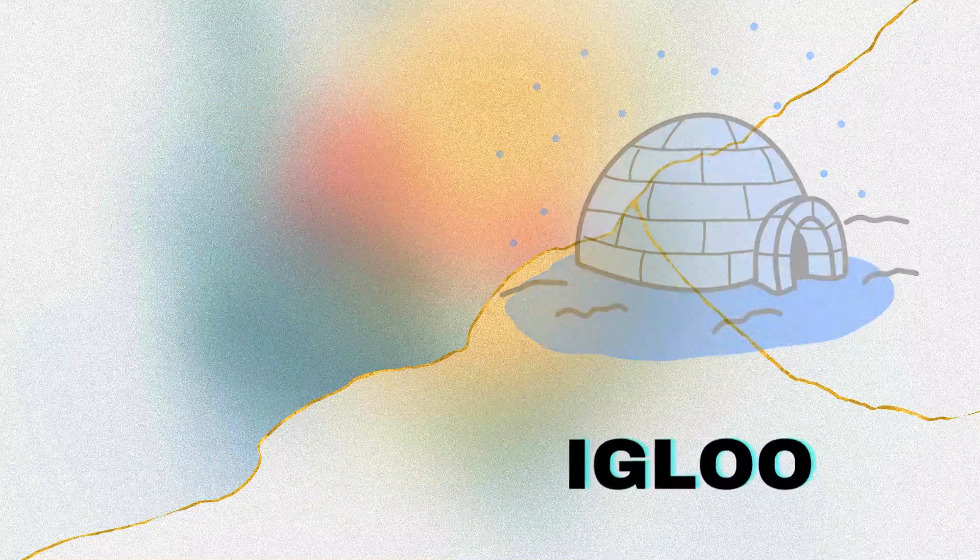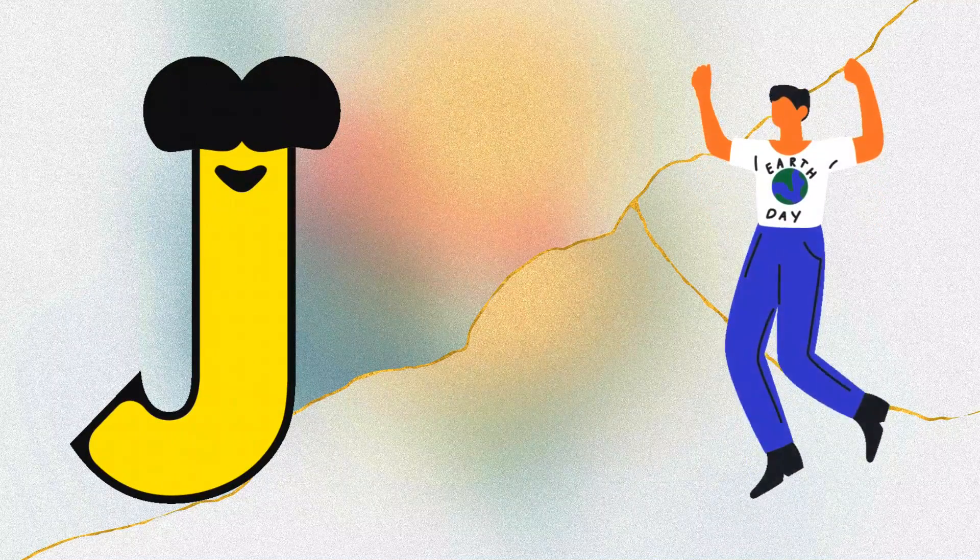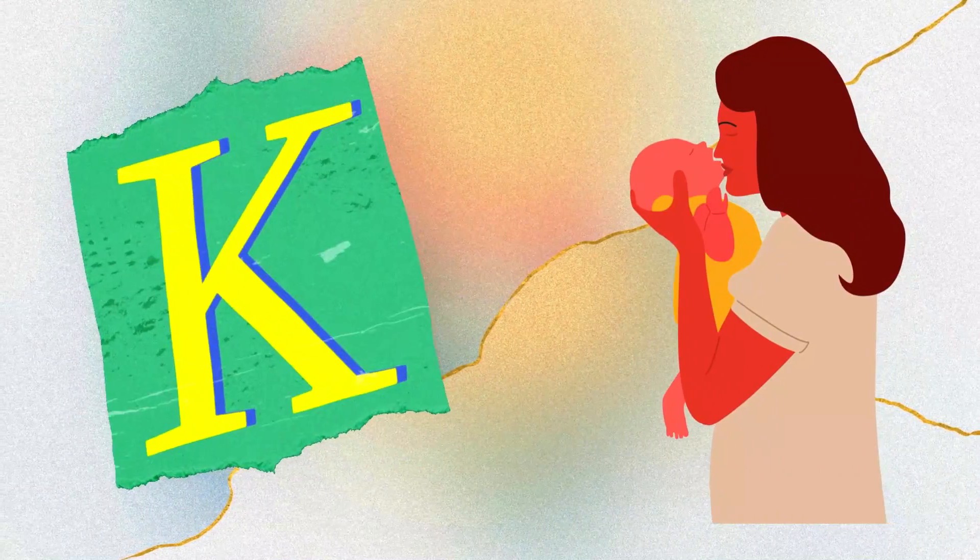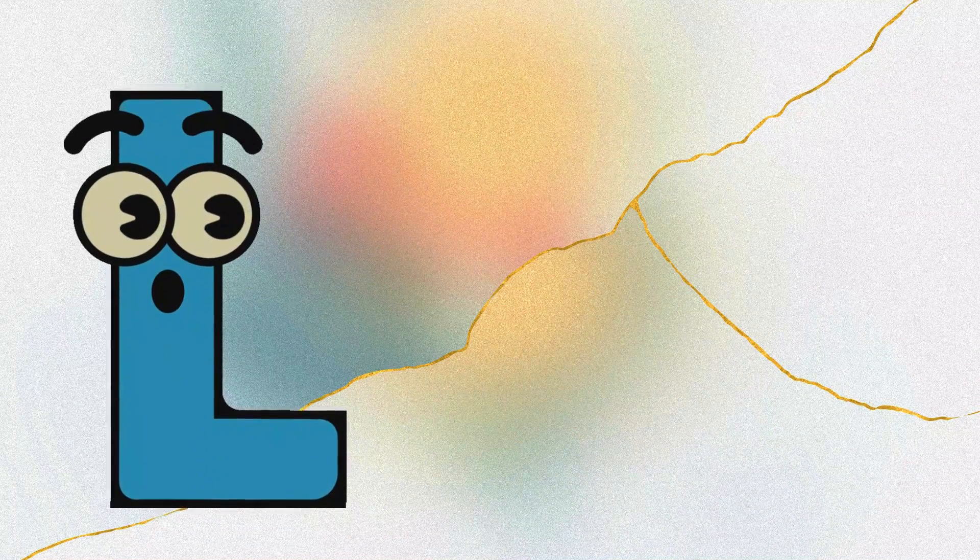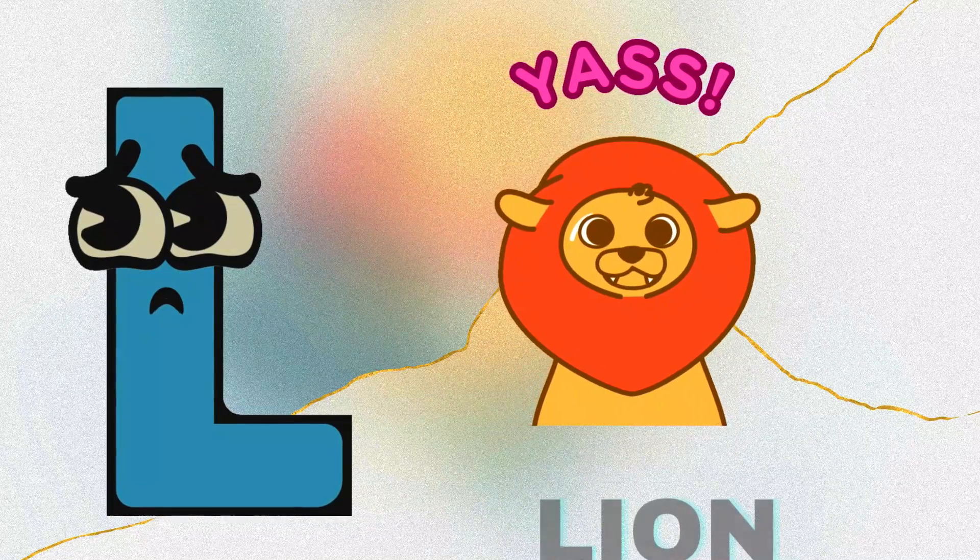I is for i-i-igloo. J is for j-j-jumping. K is for k-k-kisses, and L is for lion.